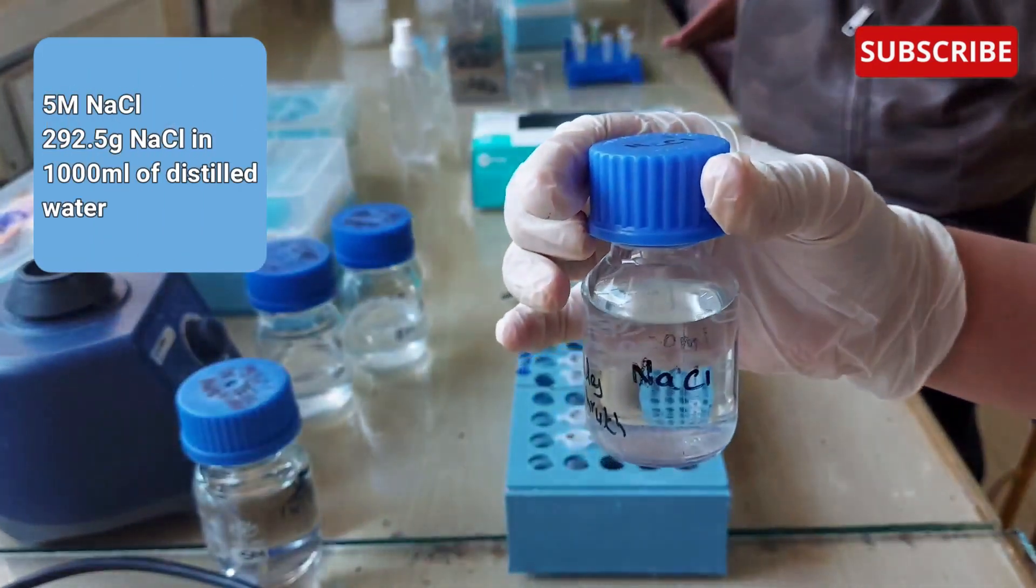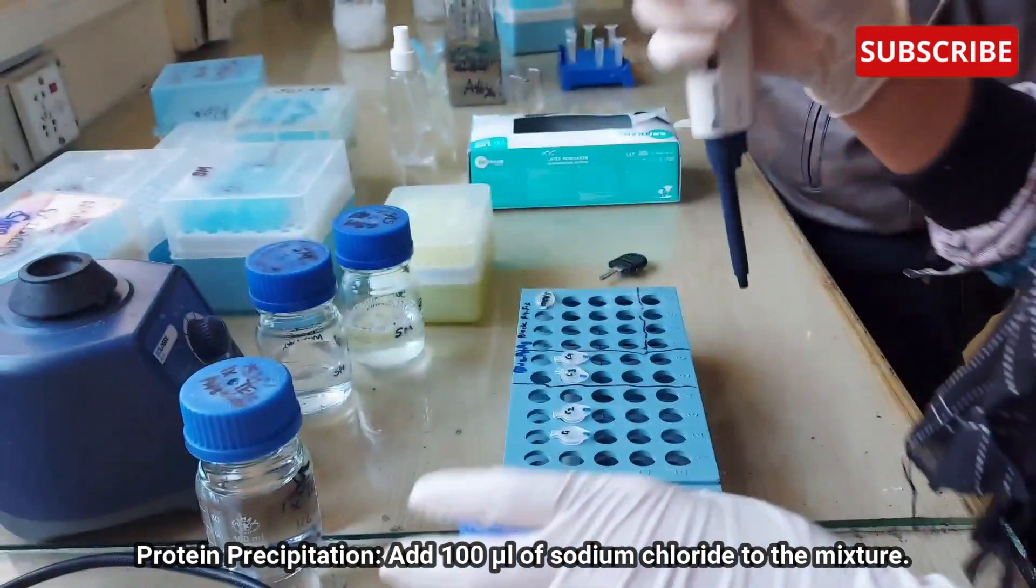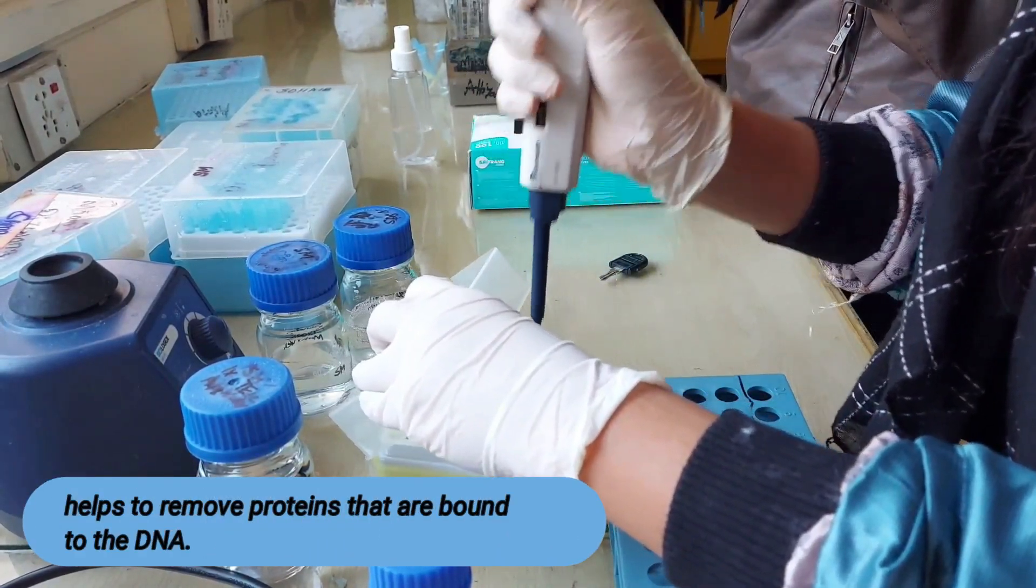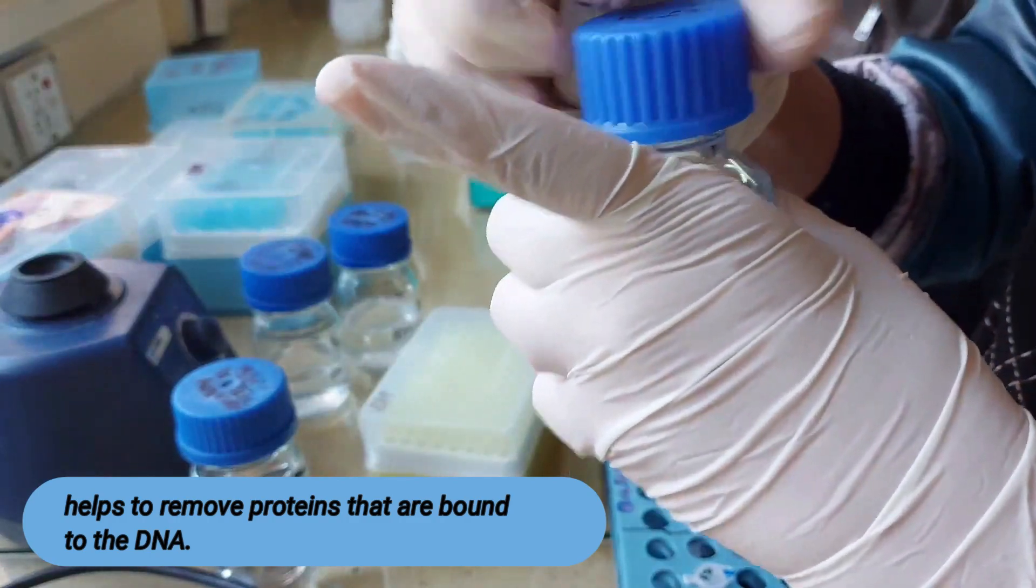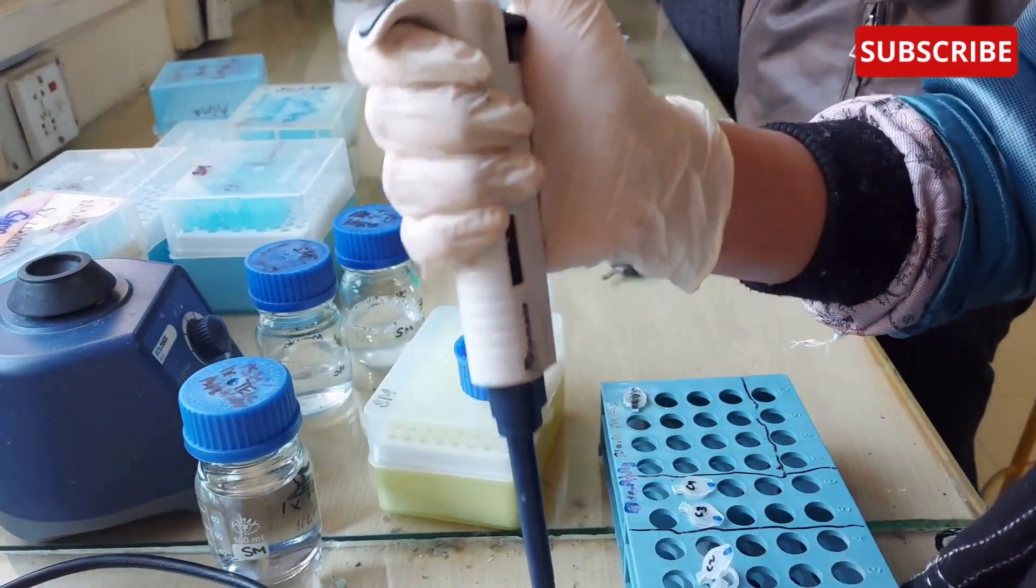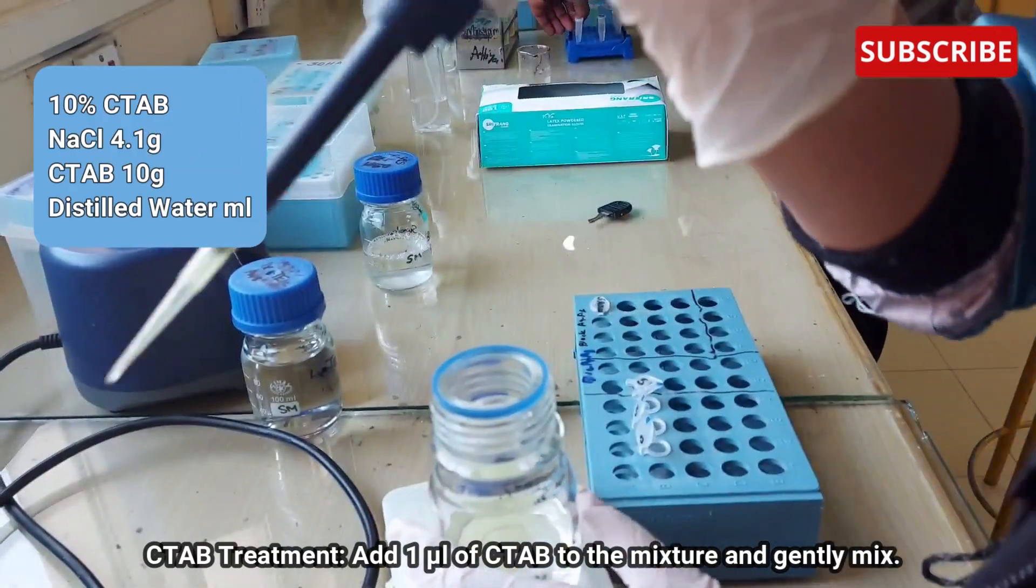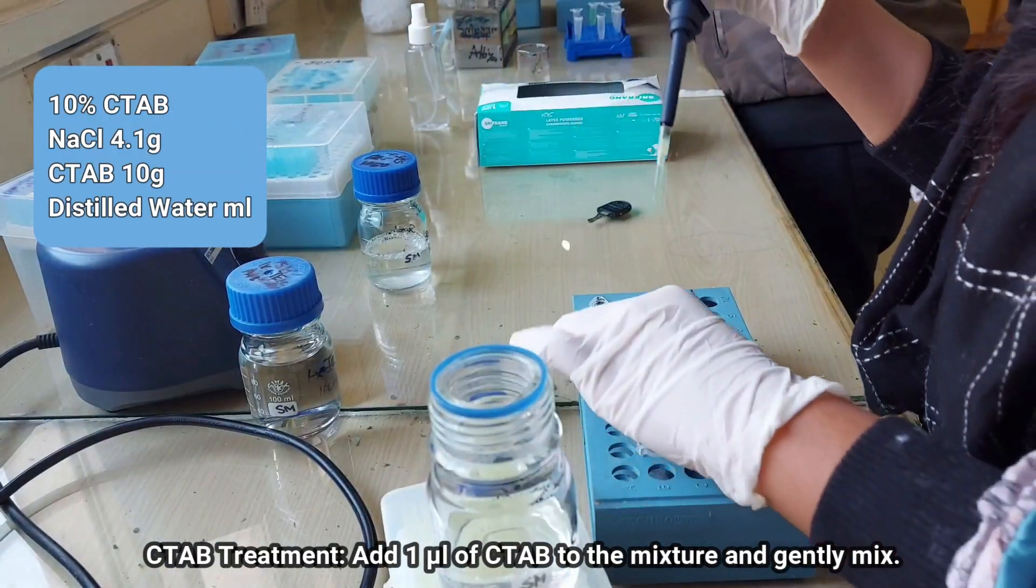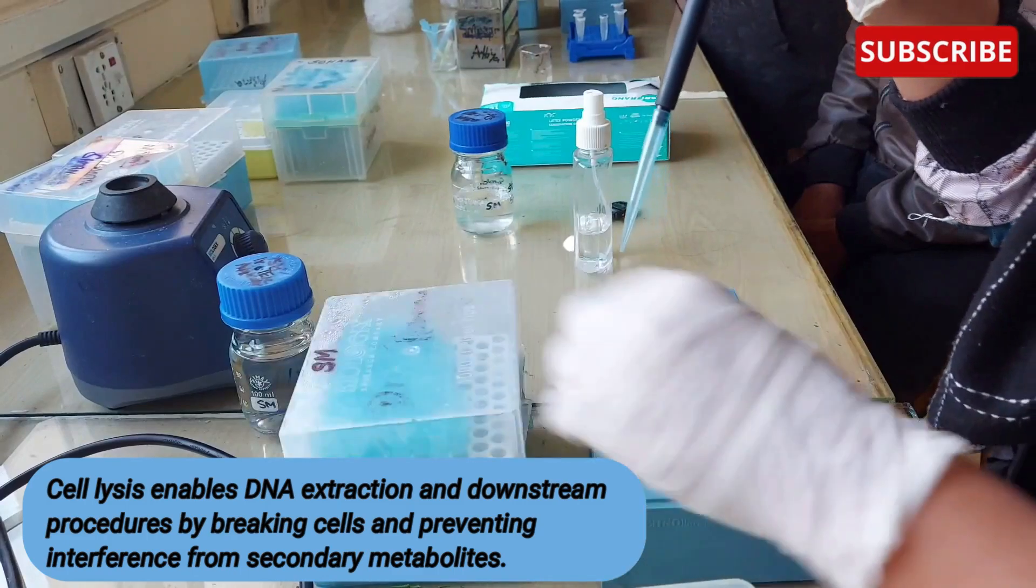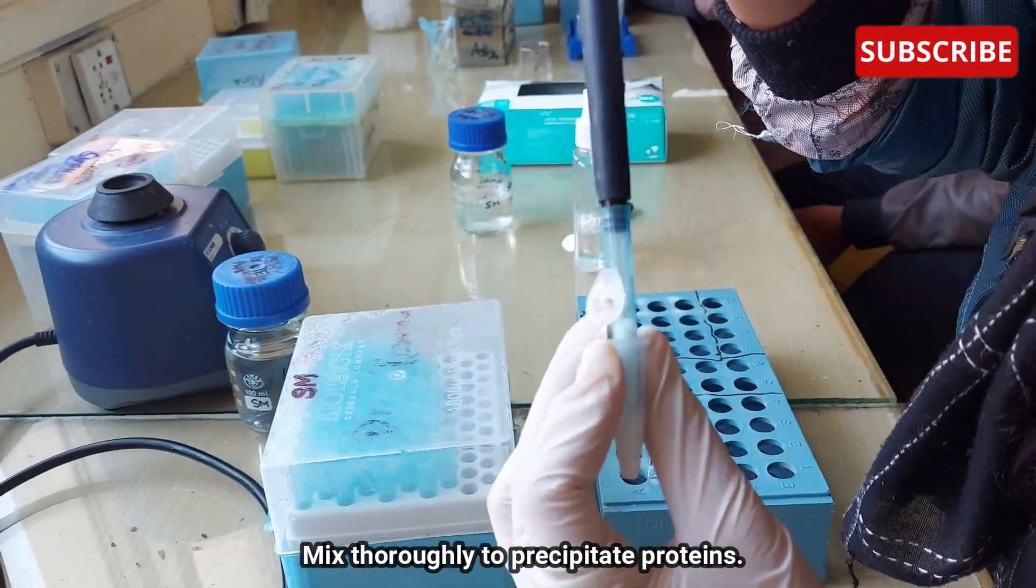Now that we have achieved cell lysis, we'll go to the next step, which is protein precipitation. Add 100 microlitre of sodium chloride to the mixture. NaCl helps to remove proteins that are bound to the DNA. It also helps to keep the proteins dissolved in aqueous layer, so they do not precipitate in the alcohol along with the DNA by neutralizing the negative charges on the DNA so that the molecules can come together. Now with the help of the micropipette, I will mix the sample properly. Constantly mixing the sample gives best result for DNA isolation.